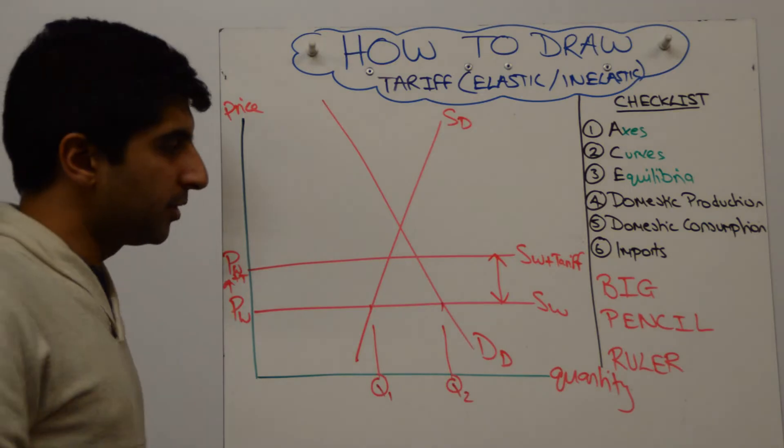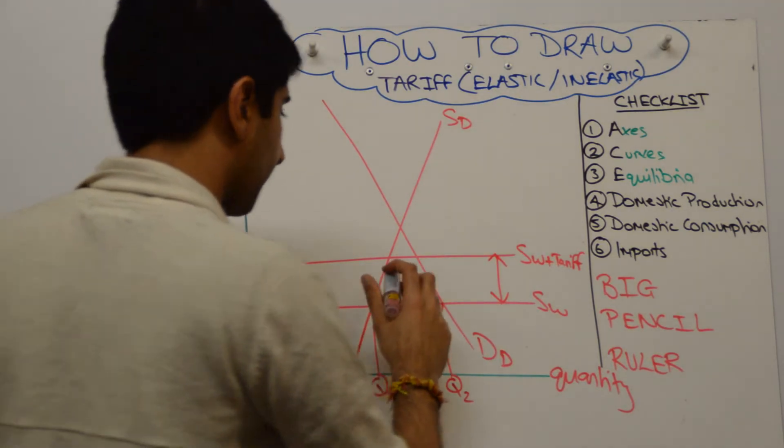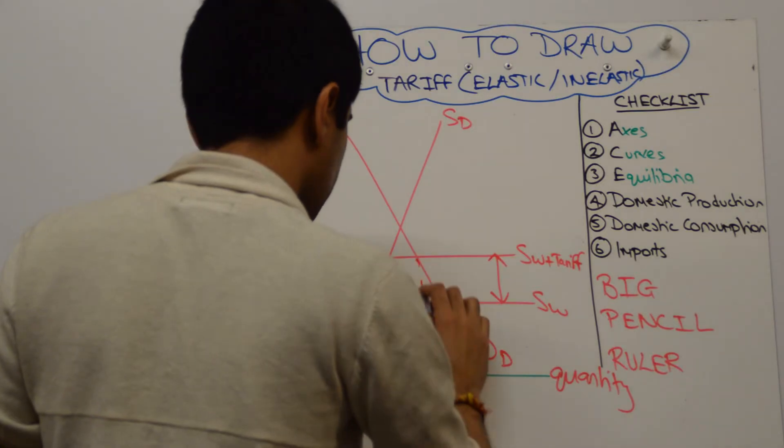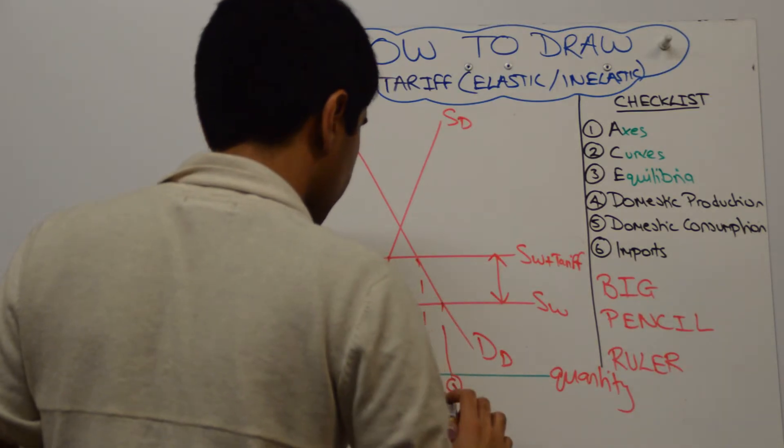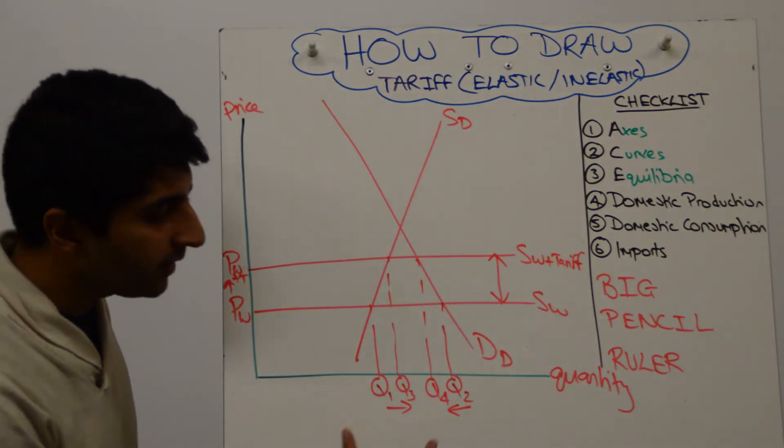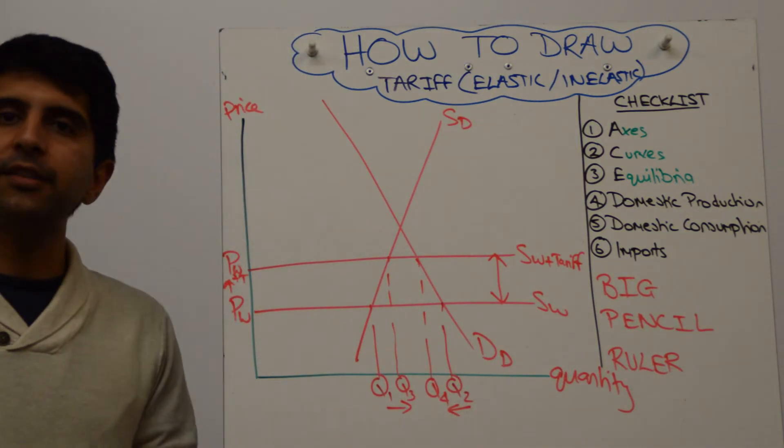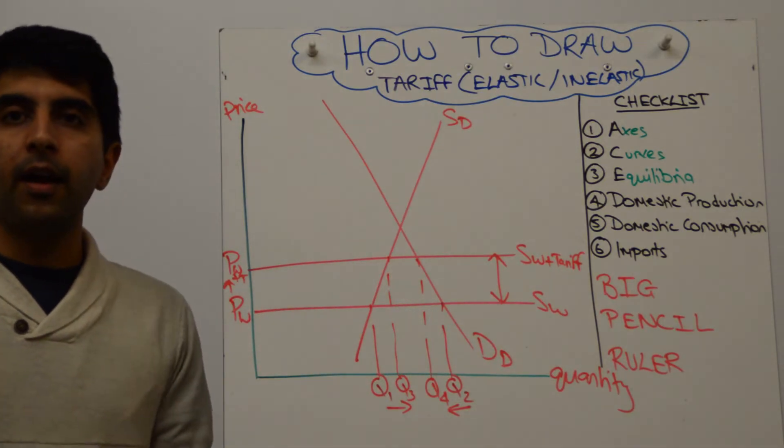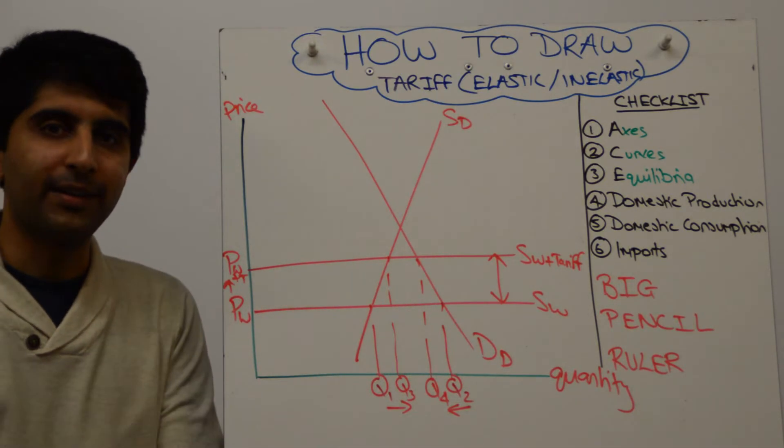We now need to show what's going to happen to domestic production and domestic consumption. So domestic production increases from Q1 to Q3. Domestic consumption reduces from Q2 to Q4. So we're used to that, but you can see how the level of imports hasn't changed very much, because demand and supply are both quite price inelastic.